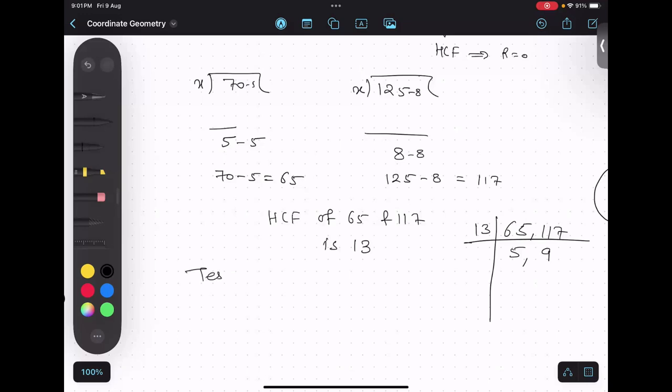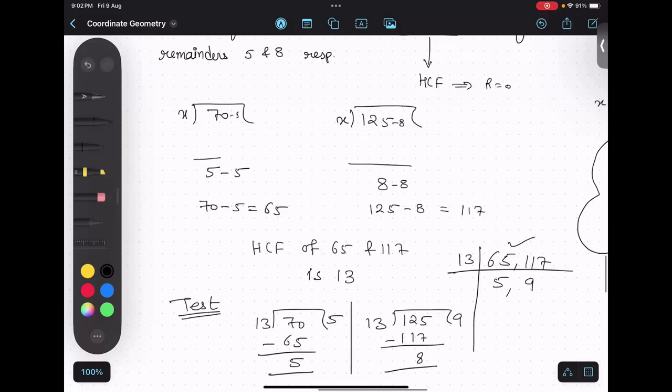Now let us test whether we are doing it correctly or not. If I divide 70 by 13, I will get remainder 5, isn't it? And let us test another number - 125 divided by 13, I will get 9, and 9 times 13 will give me 117, so the remainder is 8. Hence verified. Is it all clear?